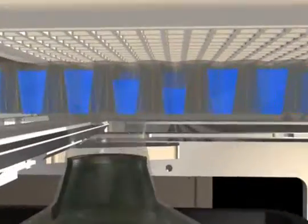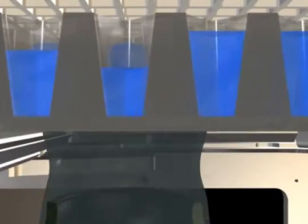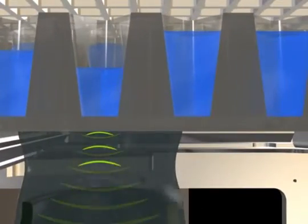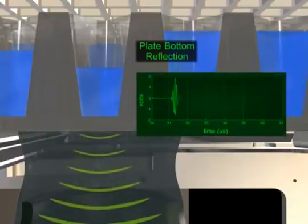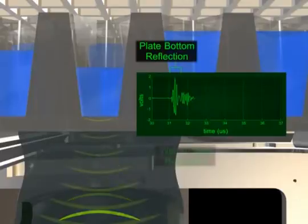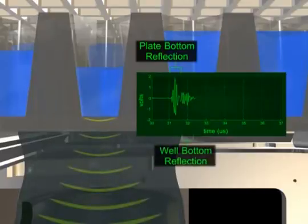Flowing water couples the transducer to the source plate. The transducer is positioned beneath a well and emits a soft ping of energy. Energy is reflected from each of the three interfaces: the bottom of the plate, the bottom of the well, and the meniscus of the fluid in the well.